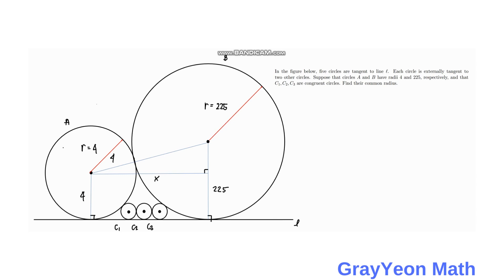The hypotenuse of the resulting right triangle is 4 plus 225, which totals 229. On the perpendicular line toward L by circle B, the total length is 225. The vertical leg of the right triangle is 225 minus 4, which is 221.